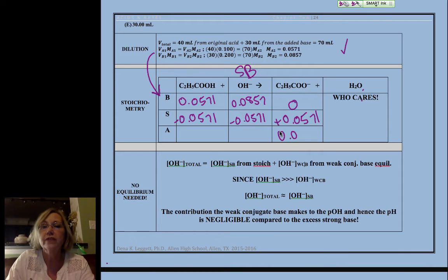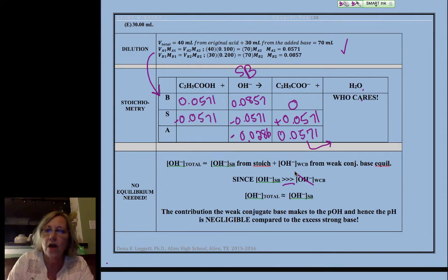Yes, we do have some weak base present and that weak base is going to contribute a teeny, teeny, teeny, tiny amount of hydroxide. So our strong base contributes so much more hydroxide than the equilibrium that we could set up from this.